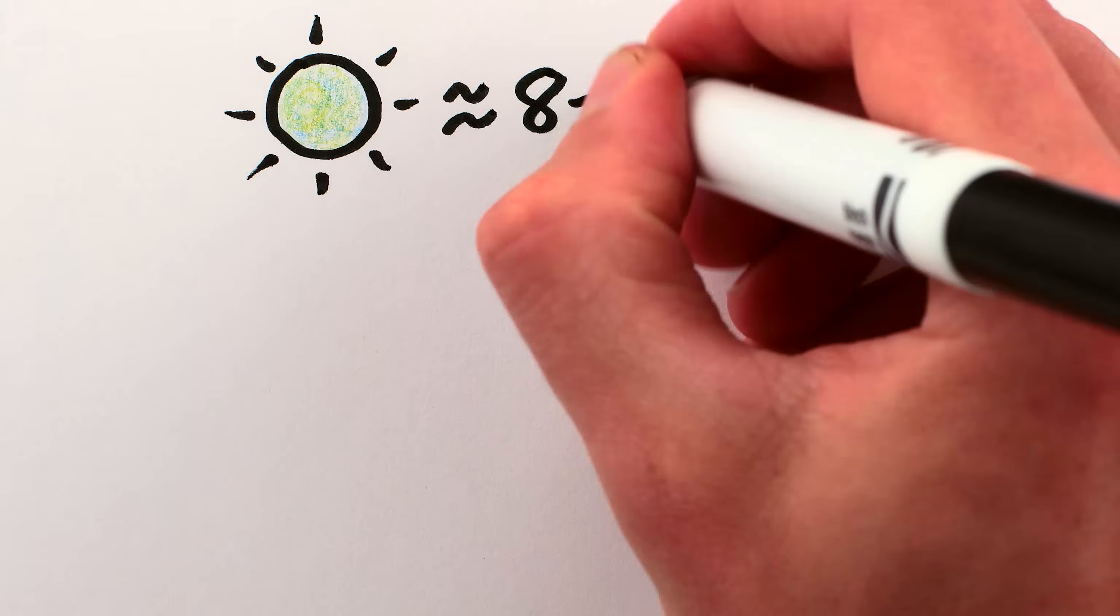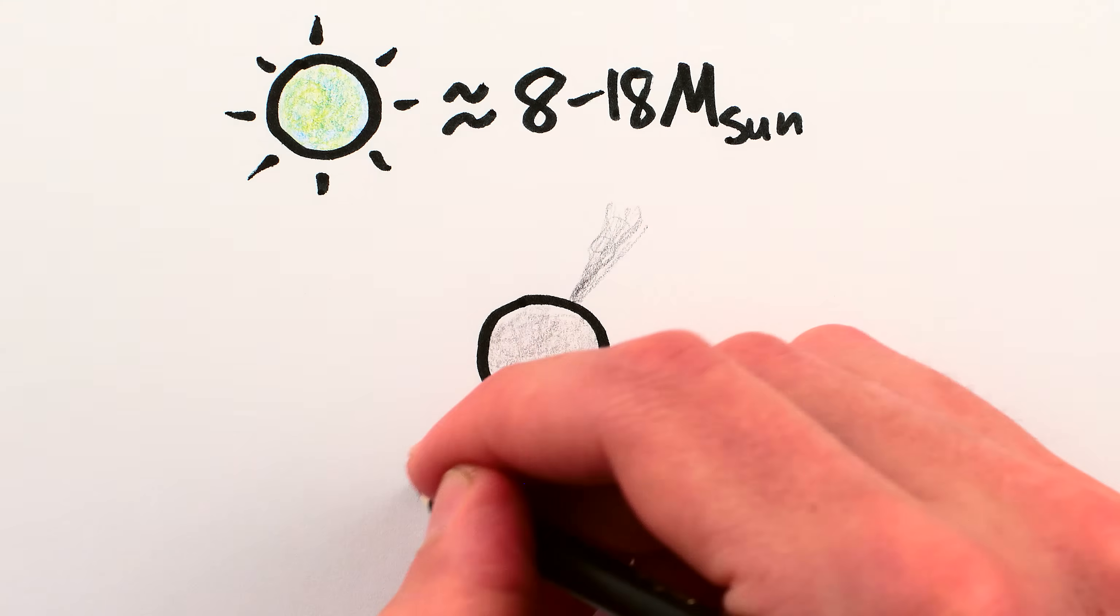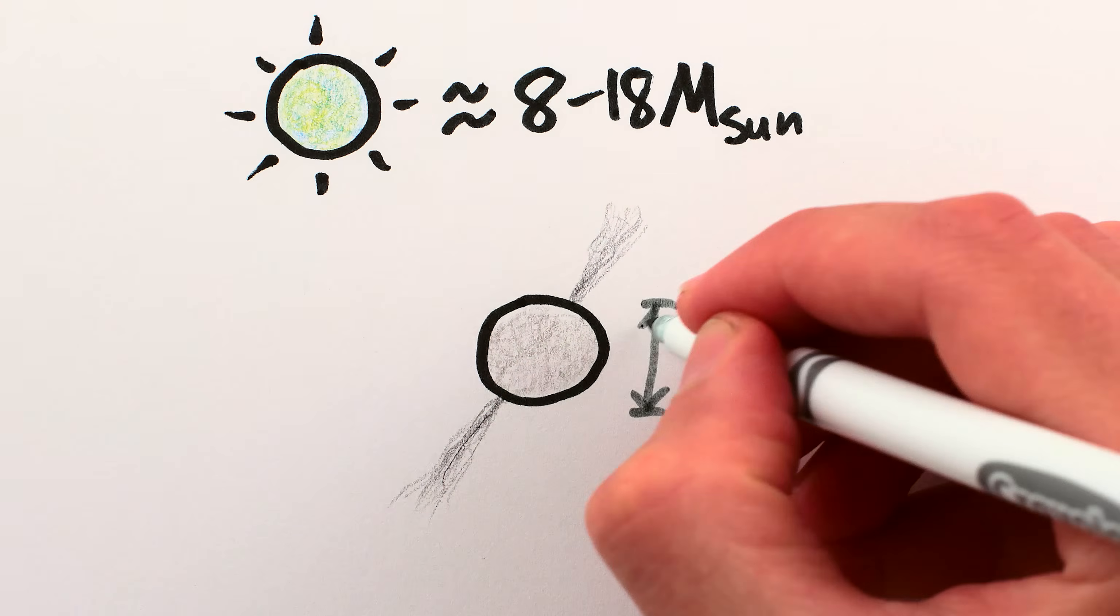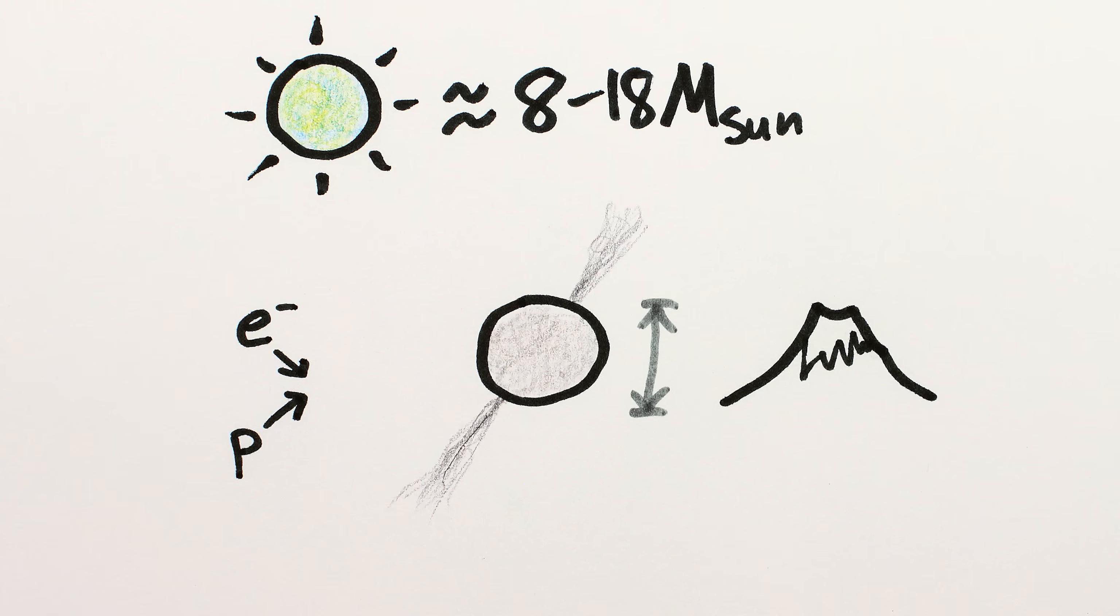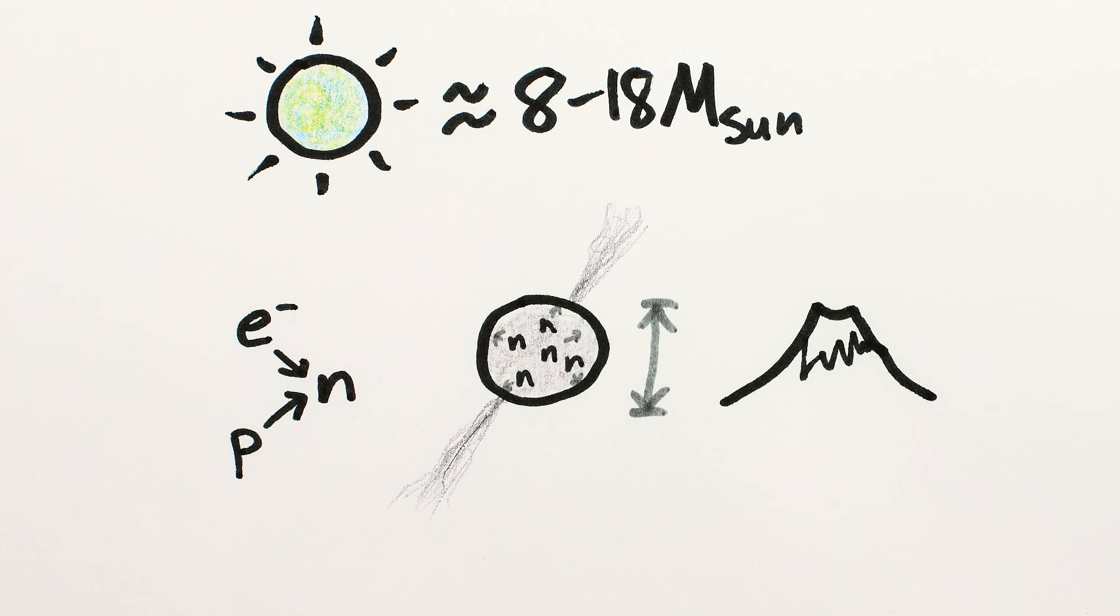If the star is bigger, its core will be too heavy for this kind of electron repulsion to hold it up against gravity, and instead it'll collapse even more, until it's around 10 kilometers in size. All of its electrons and protons fuse together into neutrons, and it's held up instead by the nuclear repulsion between neutrons, as well as the neutron version of the Pauli exclusion principle, a.k.a. a neutron star.